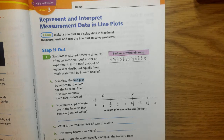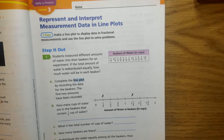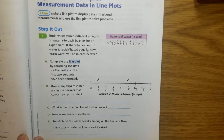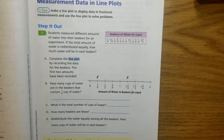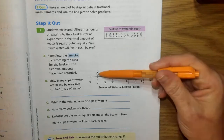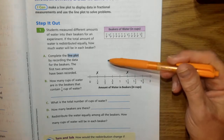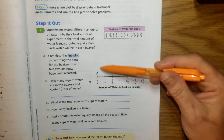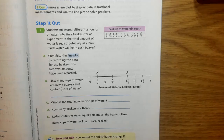We're going to be representing and interpreting measurement data in line plots. So you're going to be able to make a line plot to display data in fractional measurements and use a line plot to solve problems. A line plot is basically just a number line and the x's along the top are going to be the number that have that same amount or that same number in them.